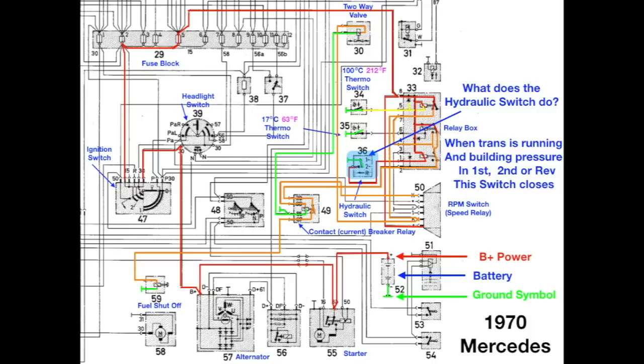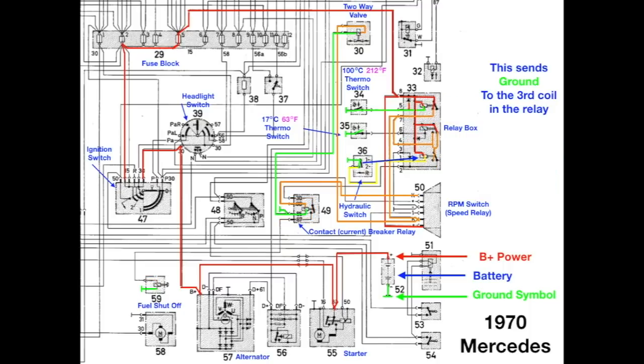What does the hydraulic switch do? When the transmission is running, and building pressure, in first, second, and reverse, as I said before, that switch opens. This sends ground to the third coil in the relay. That energizes the coil, and removes the power to the contact breaker.